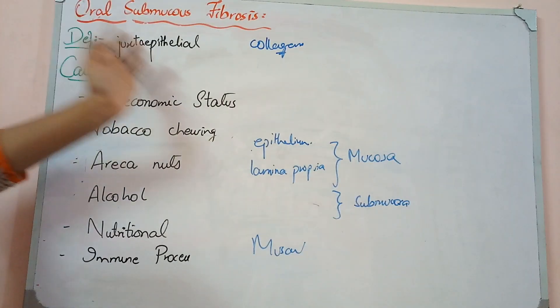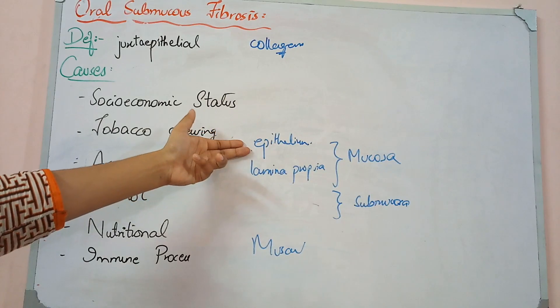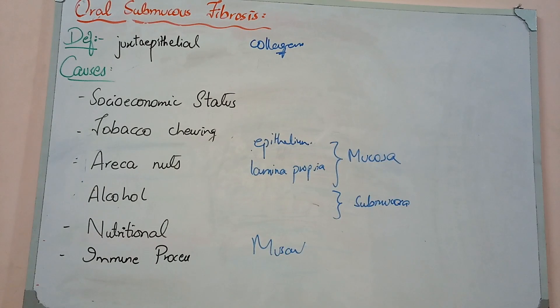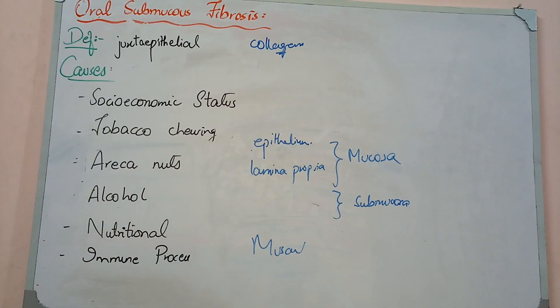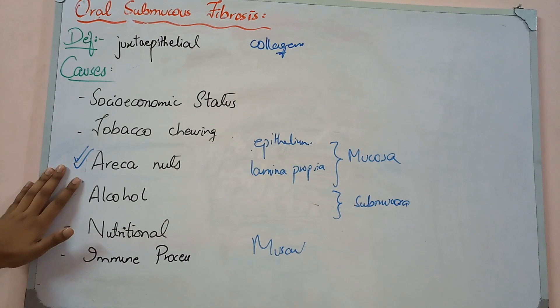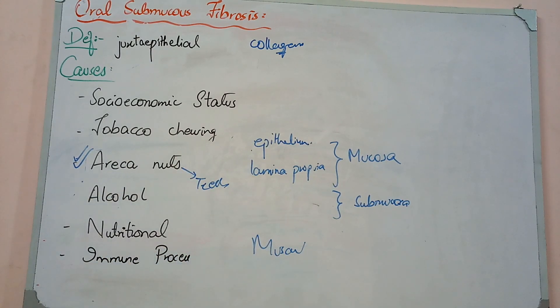The definition is juxta epithelial deposition of fibers. People have different causes, no definite established cause, but risk factors. Areca nuts are a good risk factor because people eating areca nuts packets have higher risk of developing this condition as it causes inflammatory reaction. T cells and collagen deposition starts. I will tell you about pathogenesis.